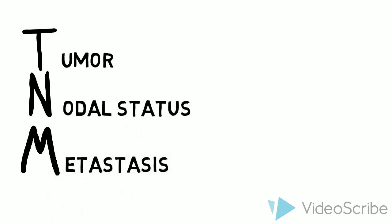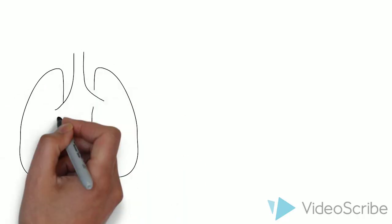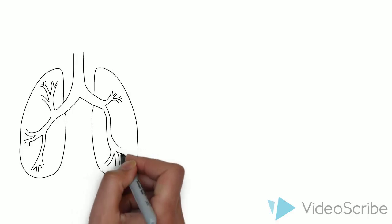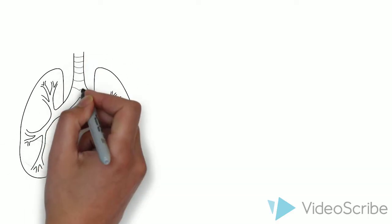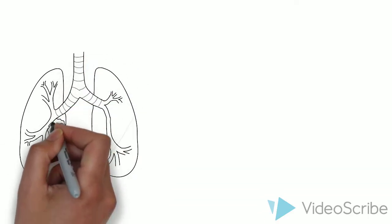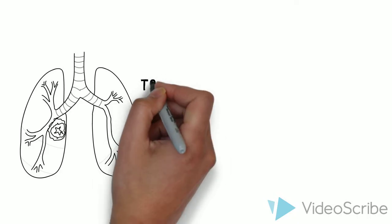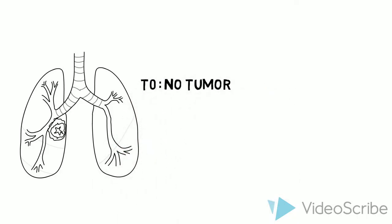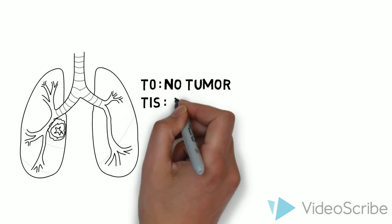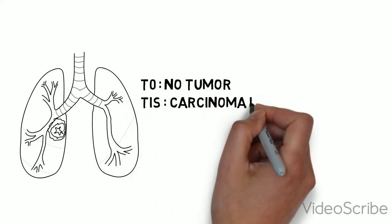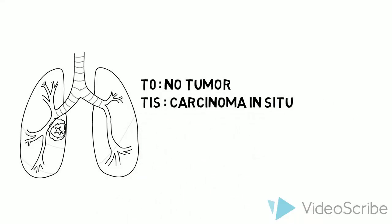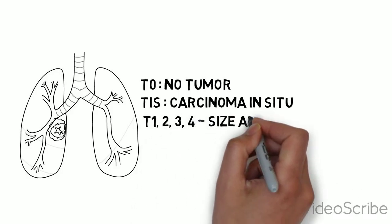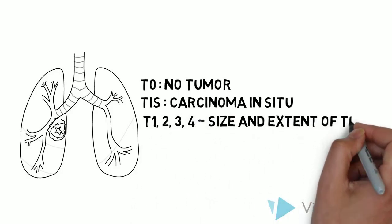With respect to the T stage, T refers to the extent of the local and primary tumor growth. T0 means there is no primary tumor that can be assessed. Tis stands for carcinoma in situ. And T1, T2, T3, or T4 represent the size and extent of the primary local tumor.